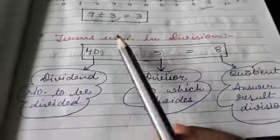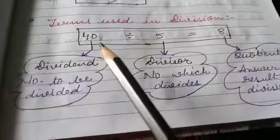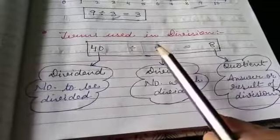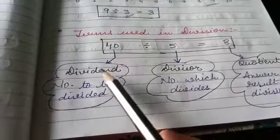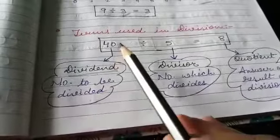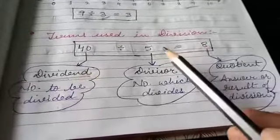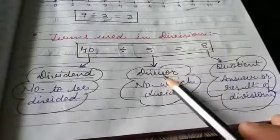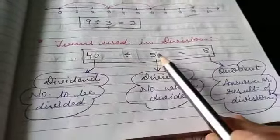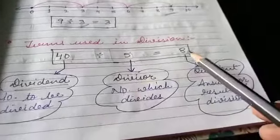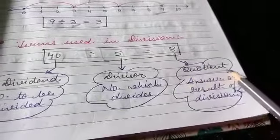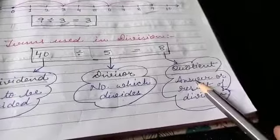There are some terms used in division. For example, in 40 divided by 5 equals 8: 40 is called the dividend — the number to be divided. 5 is called the divisor — the number which divides. And the answer, 8, is known as the quotient — the answer or result of division.